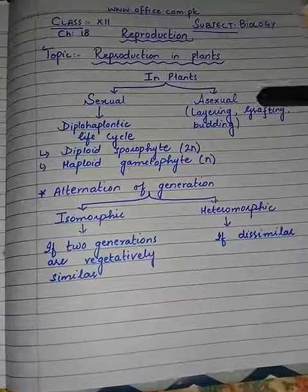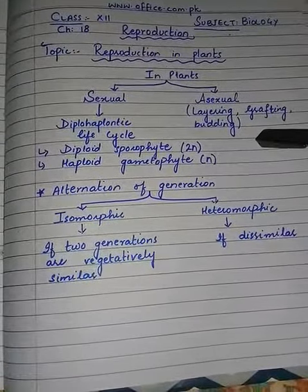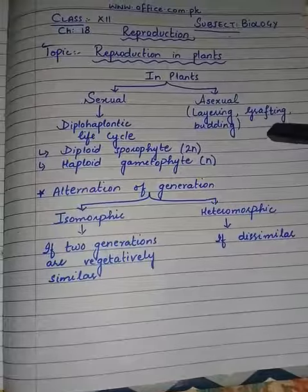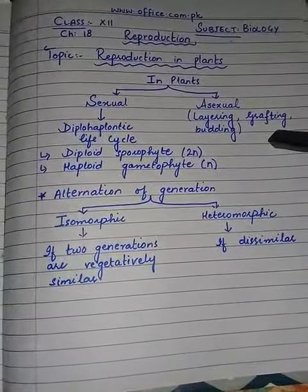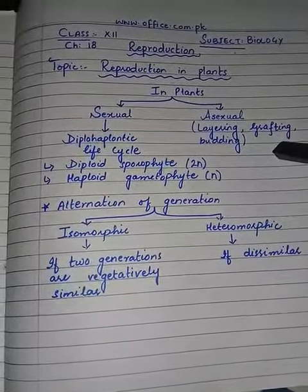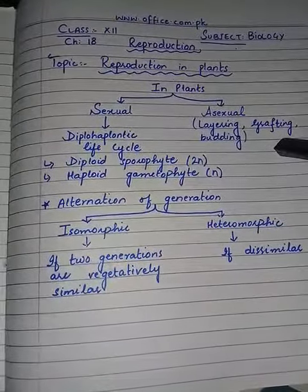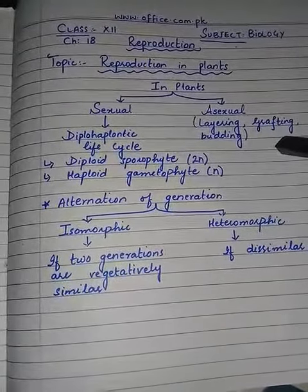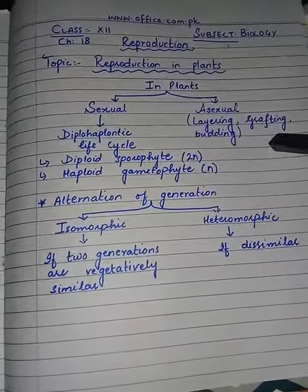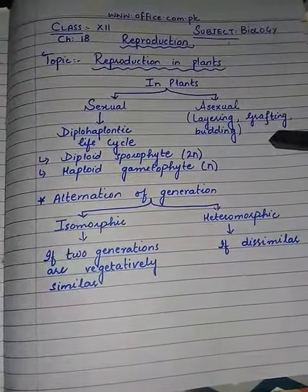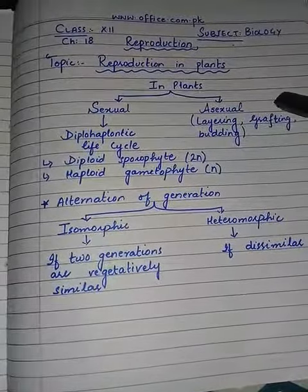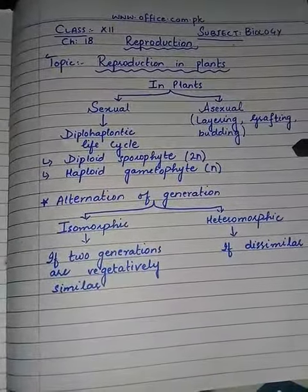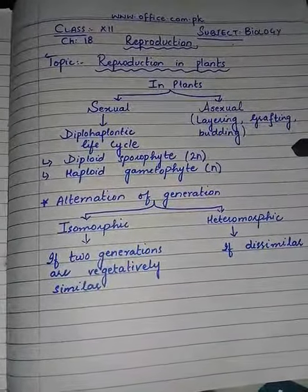Asexual reproduction includes the technologies of layering, grafting, and budding. These technologies are becoming very popular in genetic engineering and cloning techniques, which are developed to benefit human beings and also increase the resistance of plants to various diseases.